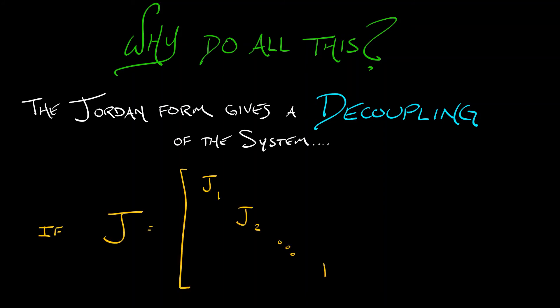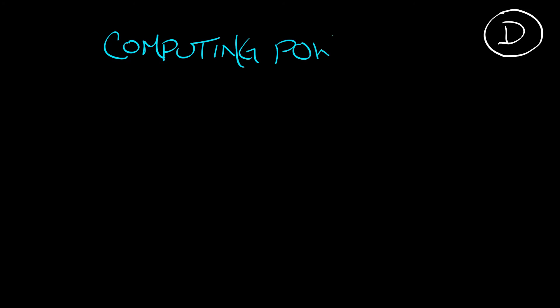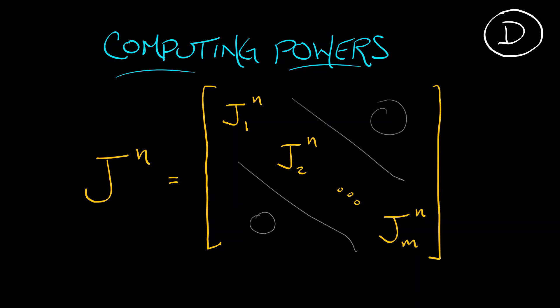If we have a block diagonal matrix J and want to compute powers of it, then J^n is the block diagonal matrix with the same pattern of zeros, but along the diagonal you have powers of the diagonal blocks: J₁^n, J₂^n, all the way down the line. That is really nice.